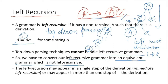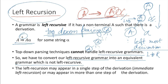If we want to continue with top-down parsing, and this top-down parsing can't handle left recursive grammars, then the only option we have is to remove the left recursion.